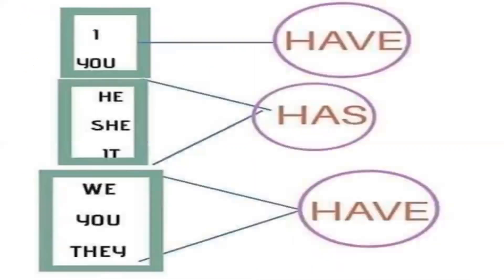Acá les estoy poniendo bastante claro para que ustedes entiendan cuándo usamos have y cuándo usamos has. Voy a usar HAVE con I, you, we, you, and they. I have, you have, we have, you have, they have - yo tengo, tú tienes, nosotros tenemos, ustedes tienen, ellos tienen. ¿Y cuándo voy a usar HAS? Cuando trabajo solamente con he, she, o it. Con estos tres pronombres nada más. Recordar siempre que cuando trabajamos en presente simple, debemos tener cuidado solamente con estos tres pronombres. He has, she has, it has - él tiene, ella tiene, ello tiene.